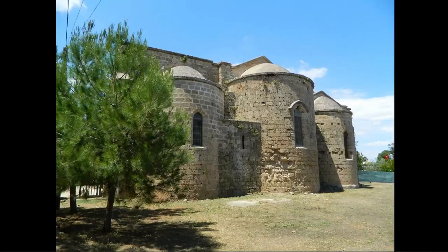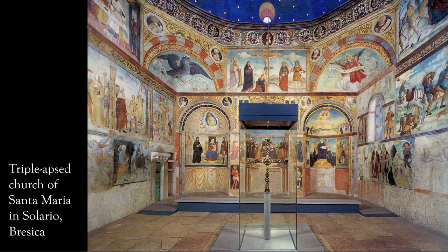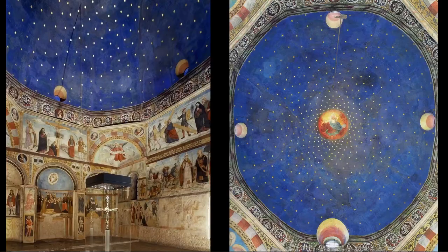The lower space — here's the exterior of the same church — became increasingly complicated with geometrical forms imposing themselves on other geometrical forms. But the eye is constantly drawn upwards to the central dome. Here's the triple-apse church of Santa Maria in Solario in Brescia, Italy, and here is the glorious dome that rises above it.